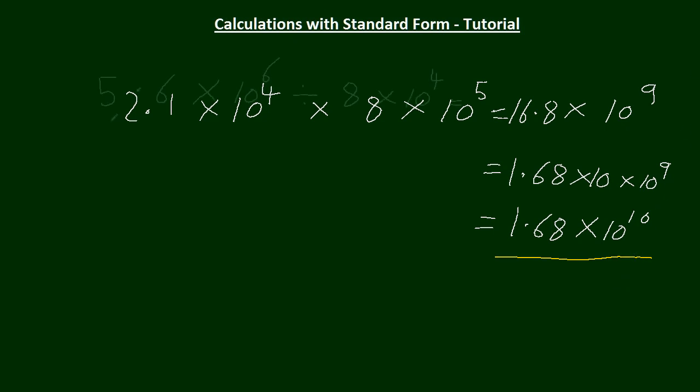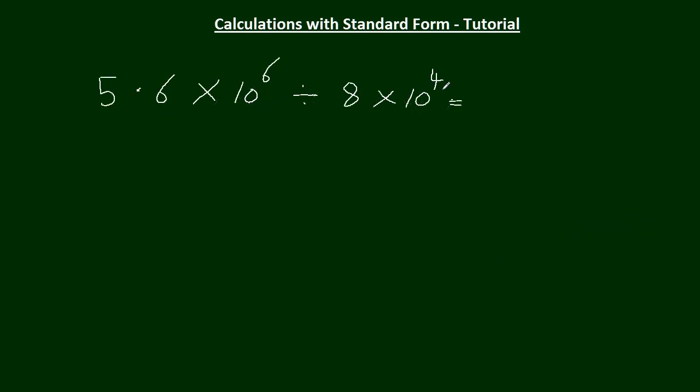On to division now. 5.6 times 10 to the 6, divided by 8 times 10 to the 4. Rules of indices will apply again. So it's 5.6 divided by 8, times 10 to the 6 minus 4. 8ths into 56 is 7, so it's 0.7 times 10 squared. And that's the same as saying 7 divided by a 10, times 10 squared.